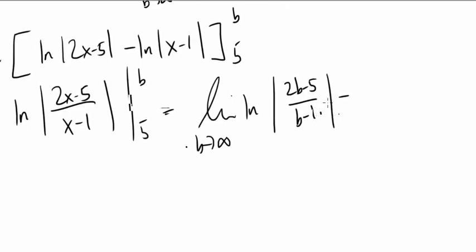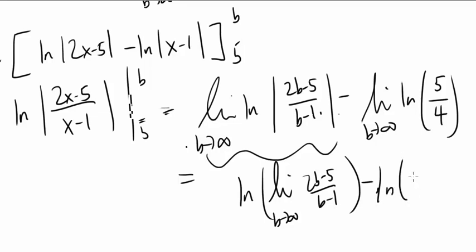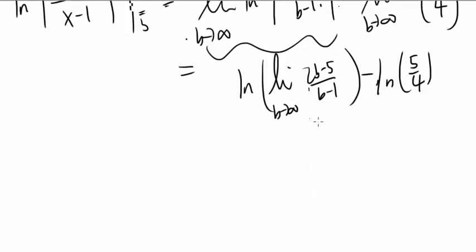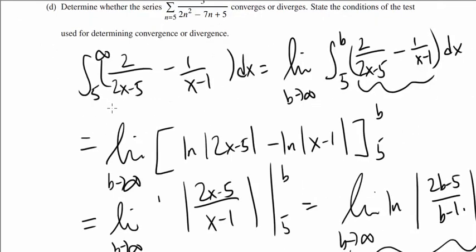The part to the left is going to be natural log of the limit as b approaches infinity of (2b - 5) over (b - 1), minus natural log of 5 over 4. We know this expression is equal to 2, so we got natural log of 2 minus natural log of 5 over 4 for the answer to part C. So it converges.